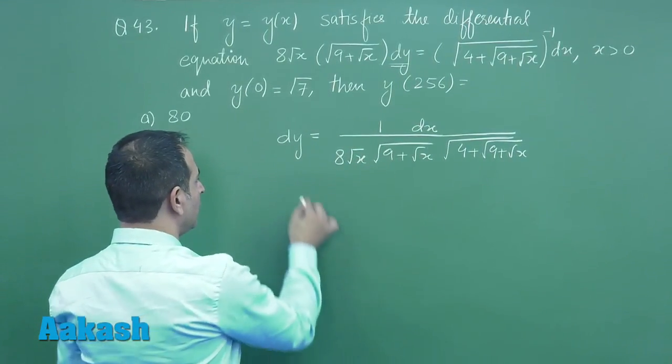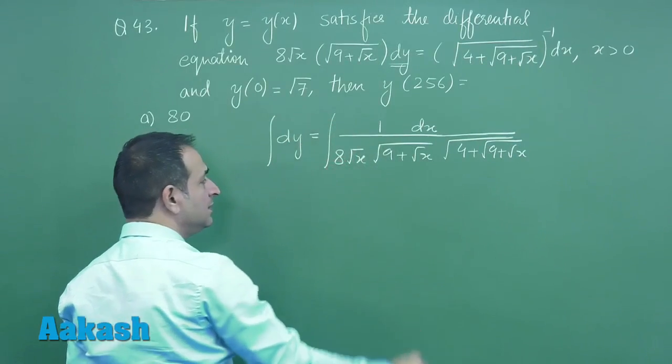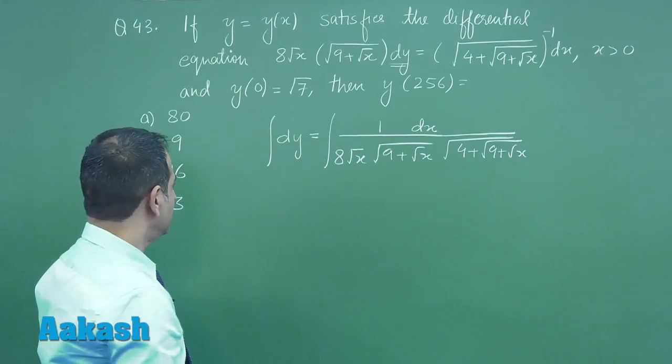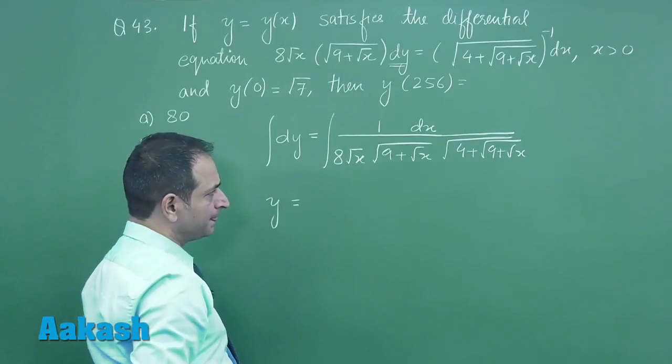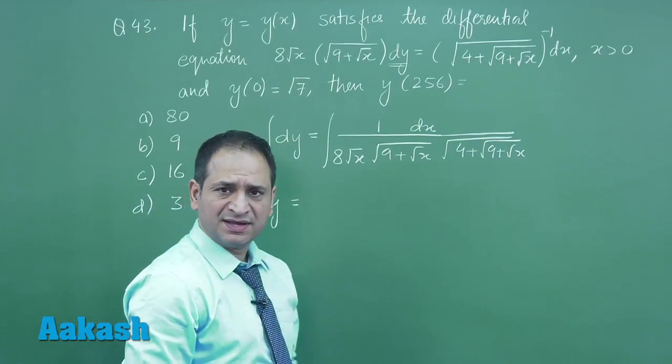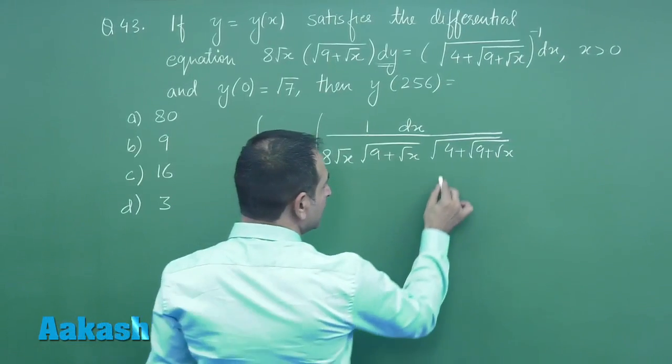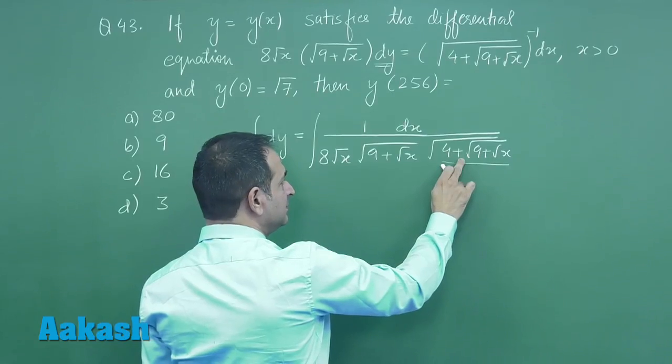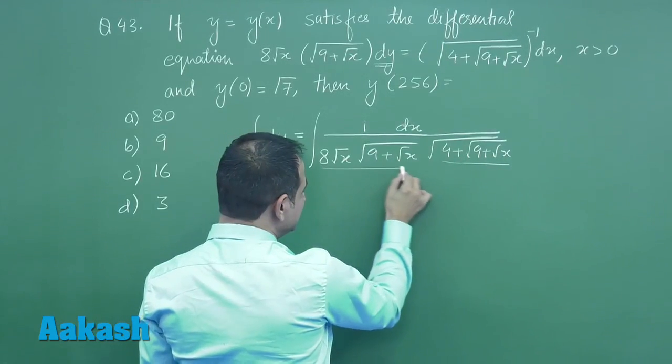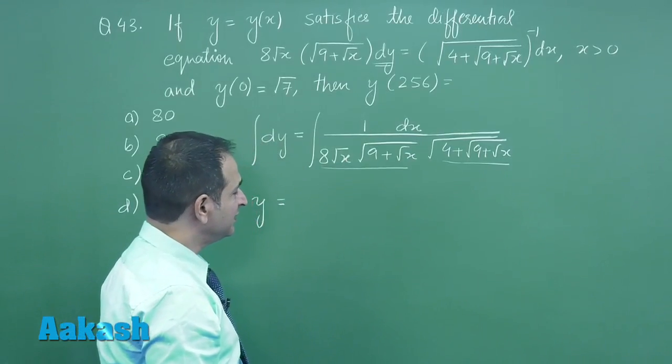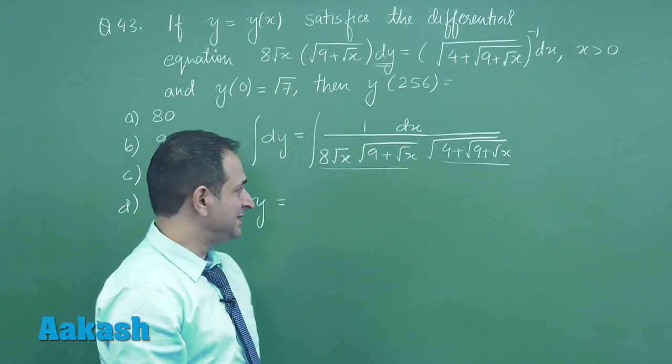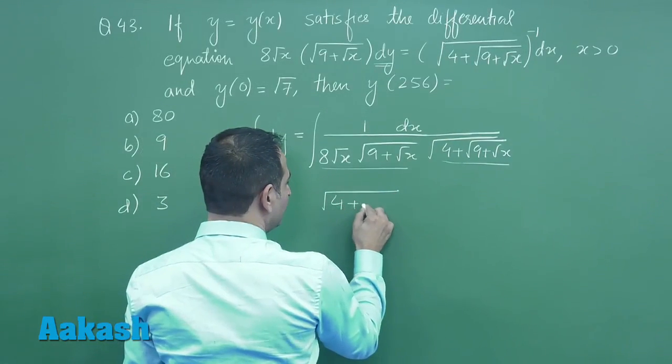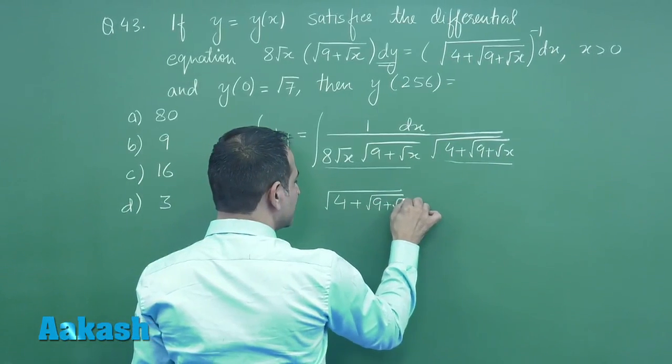Now integrating on both the sides, it is a variable separable form which we have learnt. Now this integration is very easy one if you substitute this term equal to t, then the derivative of this term is definitely going to be these two terms.